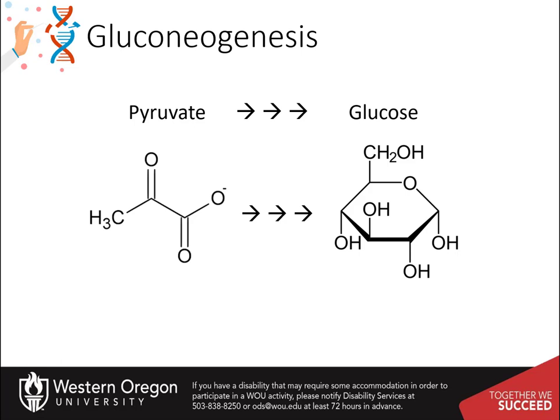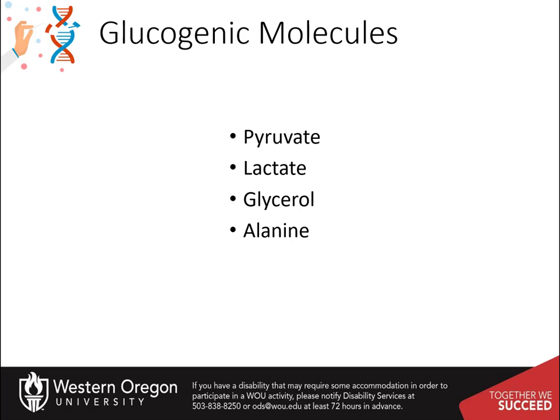Chemically, gluconeogenesis is the process of converting pyruvate, or a few other precursors, into glucose. Seven of the ten enzymatic steps from the glycolytic pathway are used in this process. Three steps of the glycolytic pathway are irreversible, thus gluconeogenesis must use novel enzymes to mediate these reaction steps. The other major non-carbohydrate precursors used to make glucose are lactate, glycerol, and alanine.